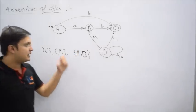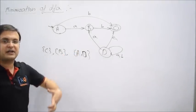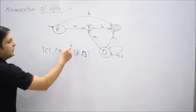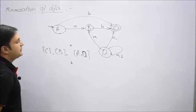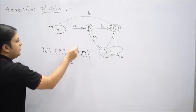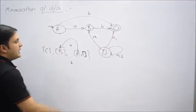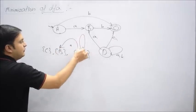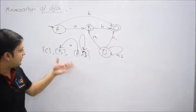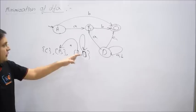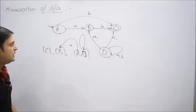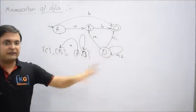Now let's go for a second iteration. B becomes separate. But A and D remain in the same group. Let's check whether A and D are equal. Capital A on small a will go to B — that is okay. But D on a will have a self-loop. Here the violation occurs. Capital A on a goes to B, but D on a has a self-loop — so there's a violation. It means A and D are also different states.